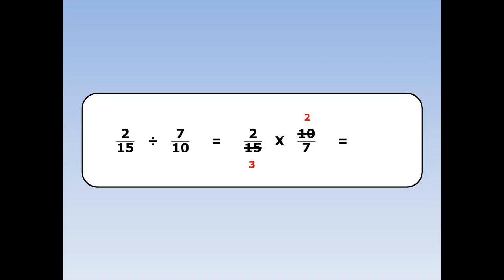10 divided by 5 is 2, and 15 divided by 5 is 3. Then we continue as normal — top times top, bottom times bottom. 2 times 2 is 4, and 3 times 7 is 21.